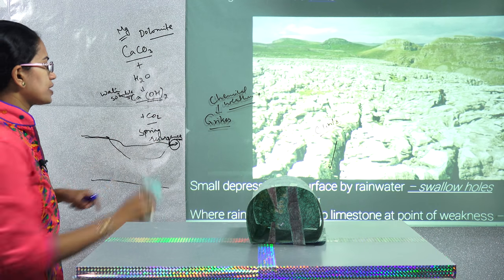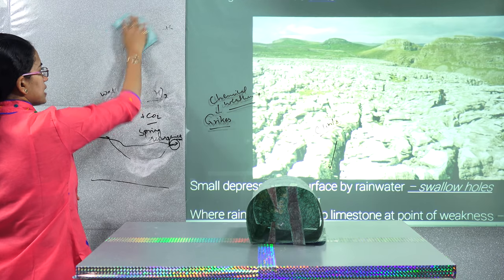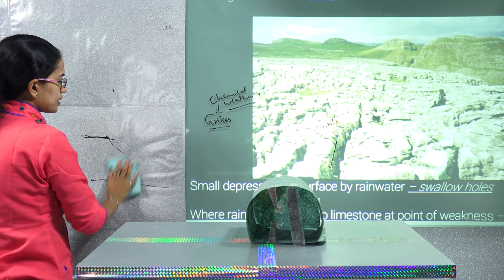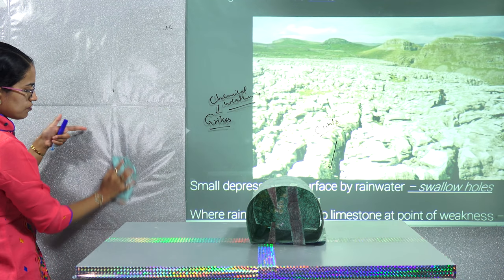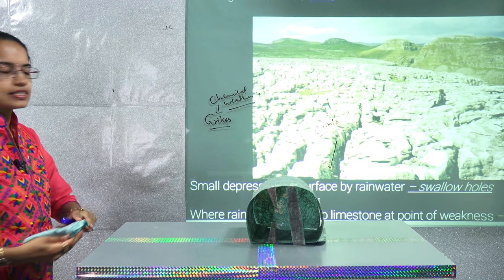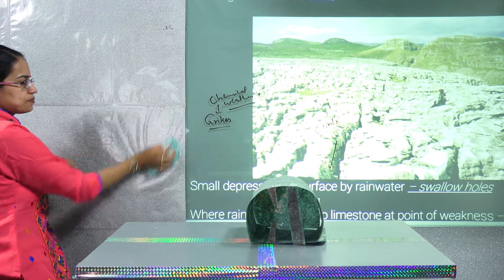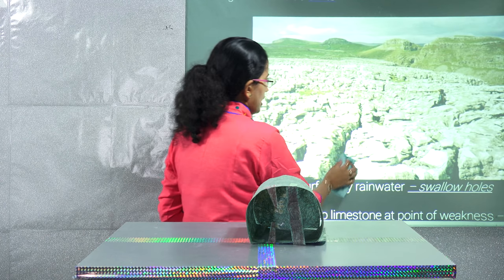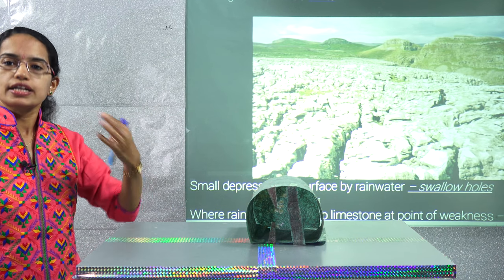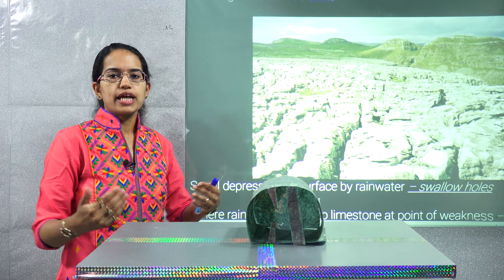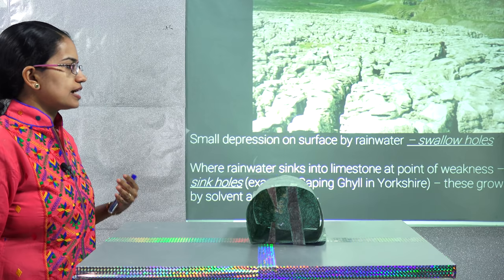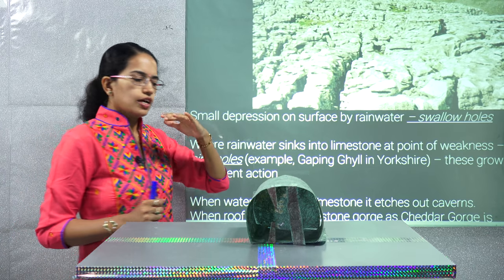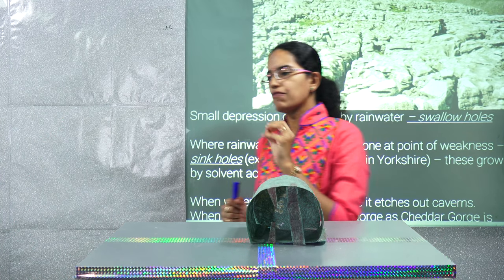What we've discussed so far is the topography seen on the surface of a limestone region — grikes and clints formed by the river. However, as the river goes underground, it forms caves, creating an underground or subterranean topography. We'll now understand this subterranean topography through its various features.